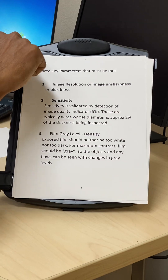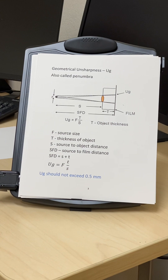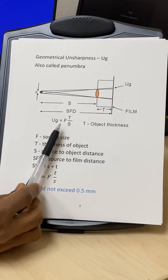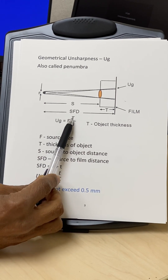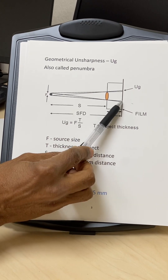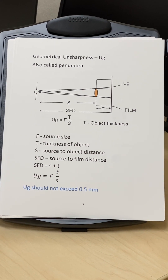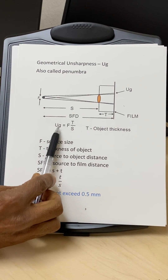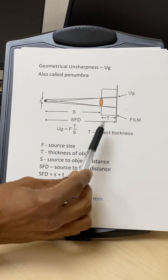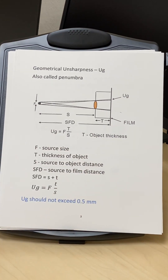Starting with the first parameter: image unsharpness, designated UG, is calculated by this formula. UG equals F times T divided by S — this is the blurriness, also called penumbra. It is calculated as source size times the thickness of the object divided by the source-to-object distance.